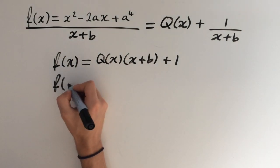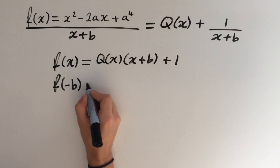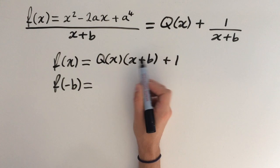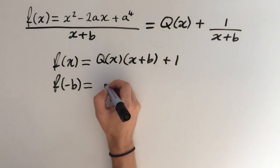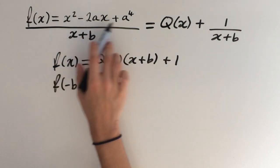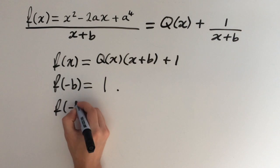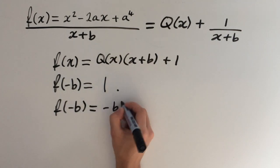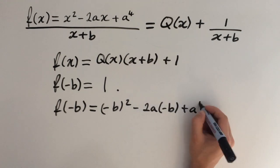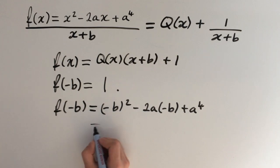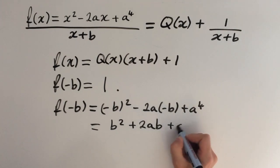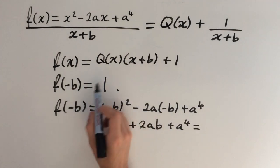So now, if we plug in x equals minus b, we get f of minus b on the left-hand side. On the right-hand side, this is going to go to 0, because minus b plus b is 0, times q of x — that's still 0. So this will equal 1. And now we can actually evaluate what f of minus b is using our polynomial. So f of minus b equals minus b squared, minus 2a times minus b, plus a to the power of 4.